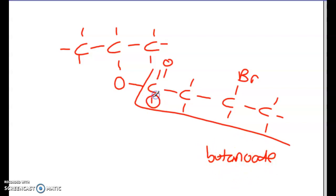And of course, carbon one is where the C double bond O is in this ester. So one, two, three. So we have a three-bromo-butanoate.